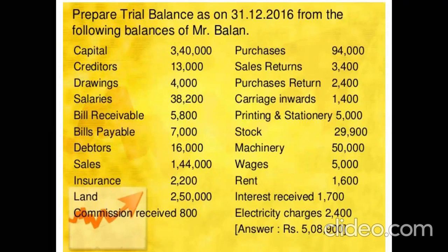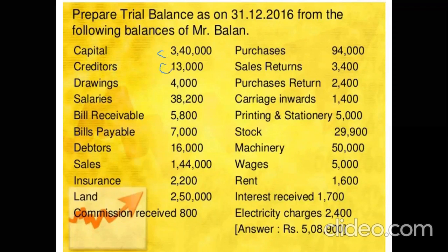Now we will look at some numericals, dividing the particulars into debits and credits. Capital has a credit balance because it is a liability. Creditor — credit balance. Drawings — debit balance, because it is an expense. Salaries — debit balance. Bills receivable is an asset, so it will have a debit balance. Bills payable is a liability, so it will have a credit balance. Debtors are assets — debit balance.